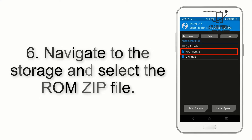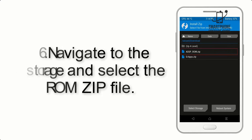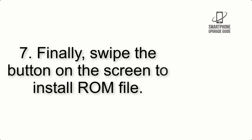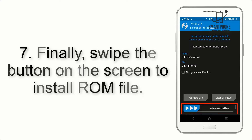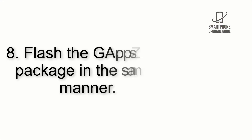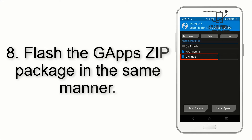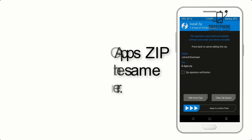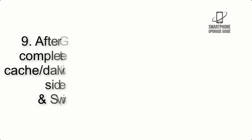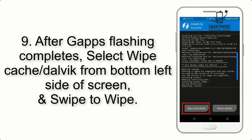Step 5: Go back to the recovery main screen and tap on the Install button. Step 6: Navigate to the storage and select the ROM zip file. Step 7: Finally, swipe the button on the screen to install the ROM file.